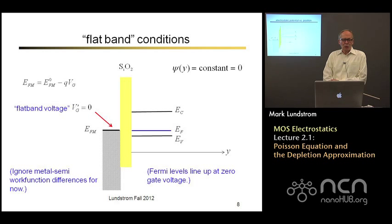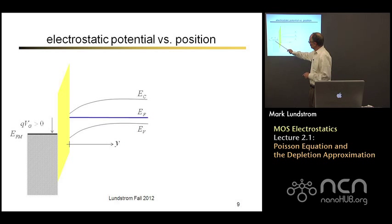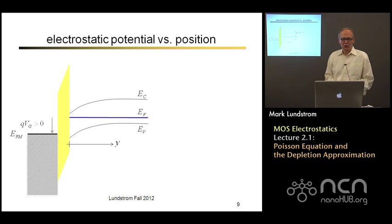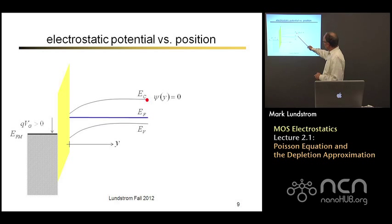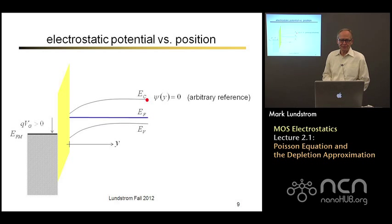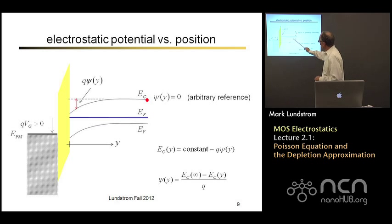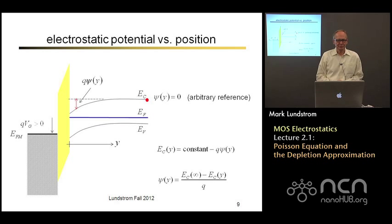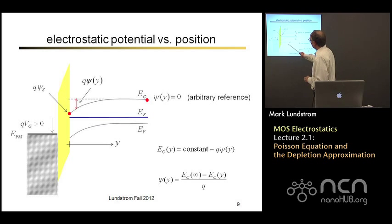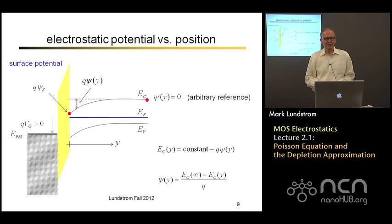Let's take a look at what would happen if we apply a positive gate voltage. Positive voltage at the gate lowers the Fermi level in the gate and pulls it down. That induces a positive potential in the semiconductor. The positive potential pulls the energy bands down. If our reference for zero potential is deep inside the semiconductor, the electrostatic potential is zero there — just an arbitrary reference we're going to use. Since the energy bands go down when the electrostatic potential goes up, as I move towards the surface the electrostatic potential will increase, equal to the difference between the conduction band in the bulk and the conduction band at any position y. If I go all the way to the surface, that's my surface potential.